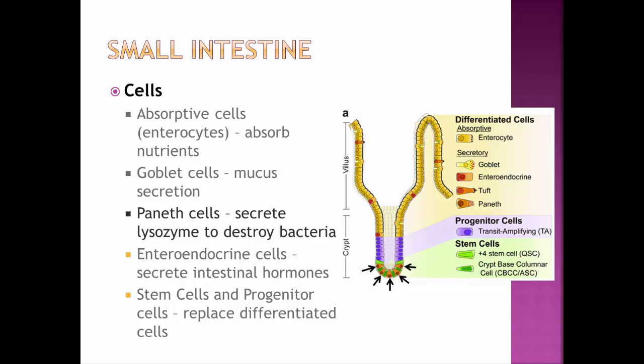Paneth cells secrete lysozyme to destroy bacteria and keep their population from taking over. Enteroendocrine cells secrete intestinal hormones needed to regulate the gallbladder, pancreas, and stomach. These include secretin, GIP (gastric inhibitory peptide), and CCK (cholecystokinin), which were introduced in the previous video and will be discussed further later.